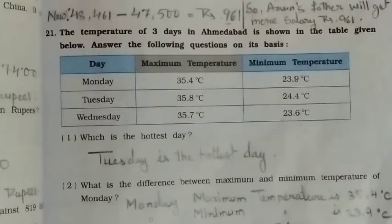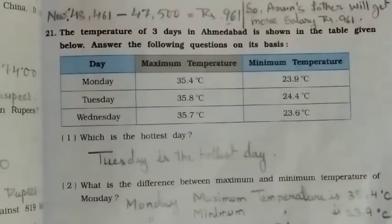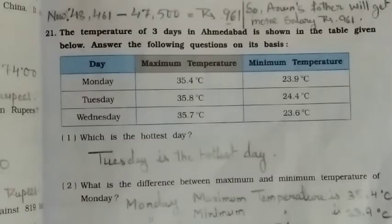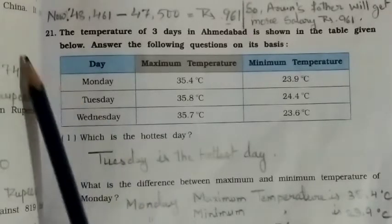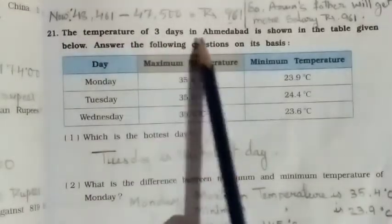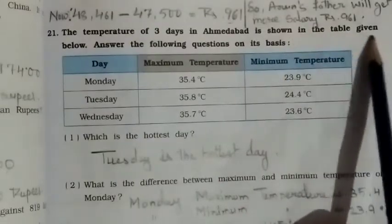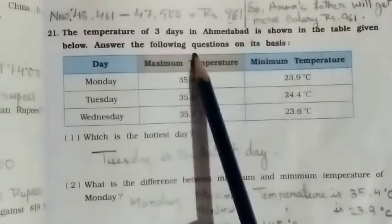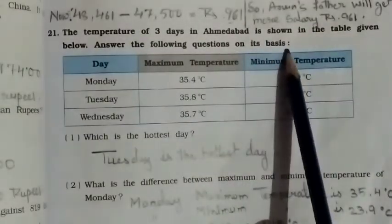Hello students, a very good morning to you all. Standard 5, subject Maths, and welcome again to our online class. Chapter 10 — 10s and 100s — and today I am going to explain question number 21: The temperature of 3 days in Ahmedabad is shown in the table given below. Answer the following questions on its basis.